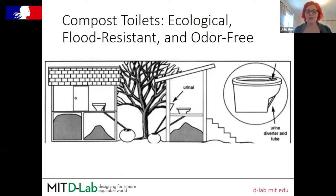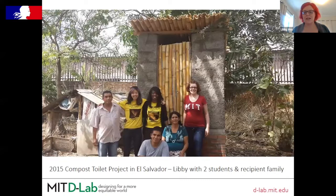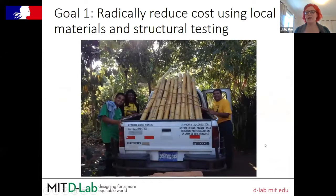These latrines could be built out of many different building materials, but we were looking at how to radically reduce the cost of building them in Central America. You can see in this photo materials like bamboo and adobe bricks underneath the plaster that have been used to bring the cost of this toilet down from an original proposal more focused on imported materials like concrete blocks.